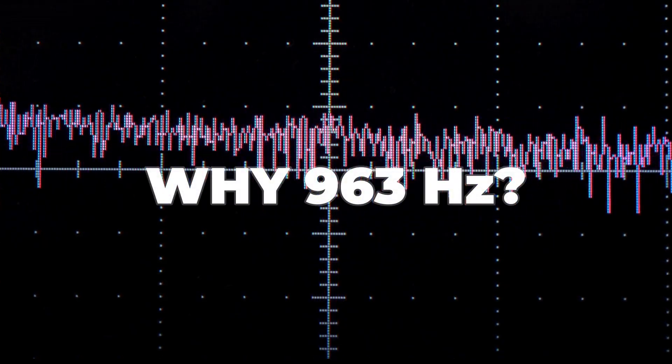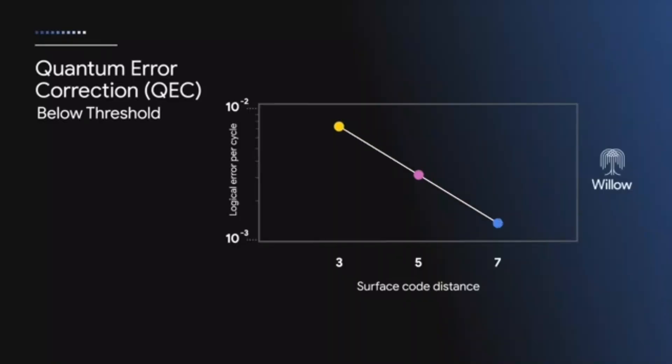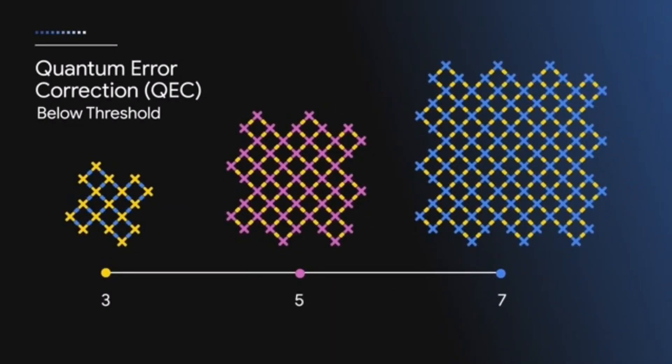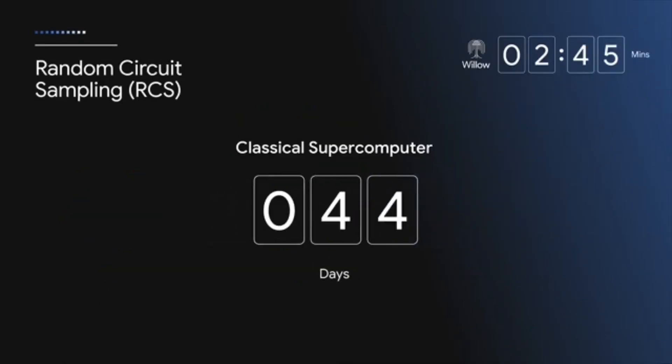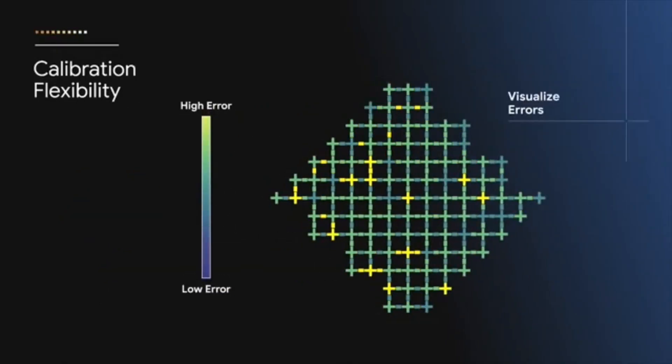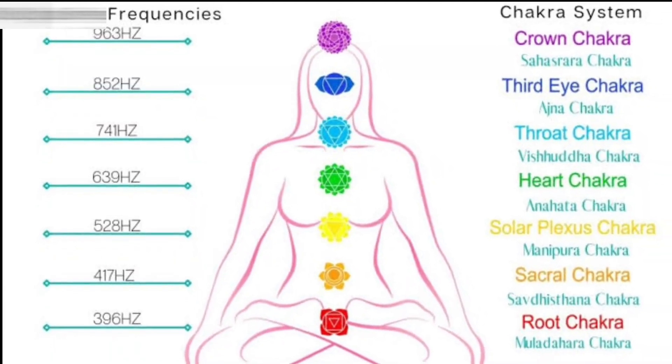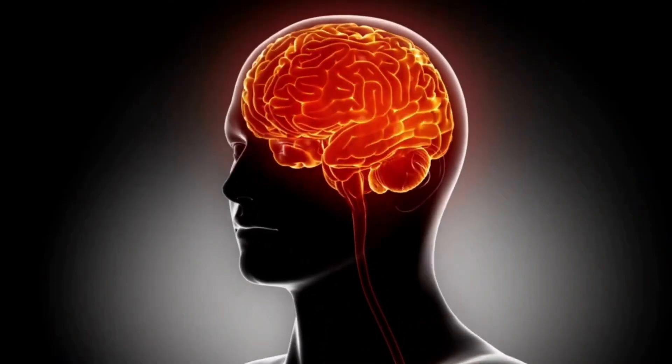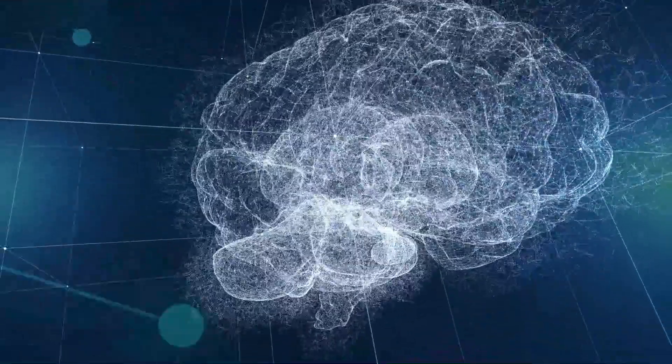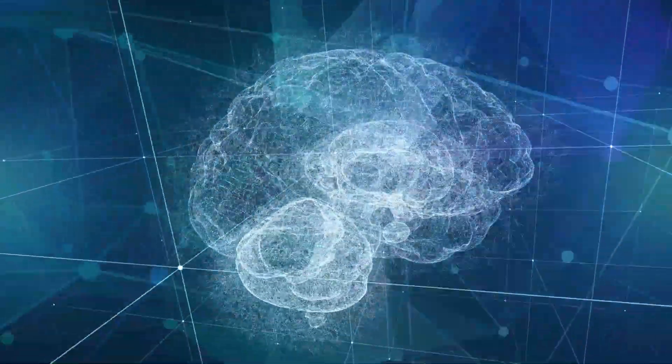That number isn't random. In certain spiritual and New Age communities, 963 hertz is believed to be the highest tone in the solfeggio frequency scale. Followers say it resonates with the pineal gland, activates higher consciousness, and connects us to the divine.